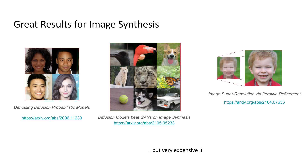Since diffusion models were kind of reinvented for image synthesis two years ago, multiple papers came out which demonstrated that diffusion models can achieve state-of-the-art scores on image synthesis. And now there are very popular text-image diffusion models, such as DALL-E 2 for example.